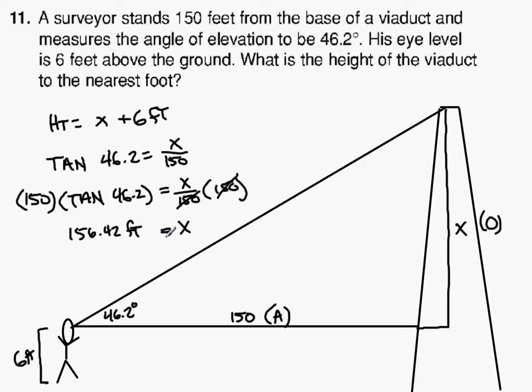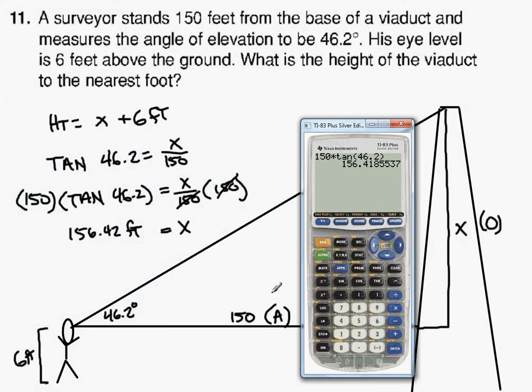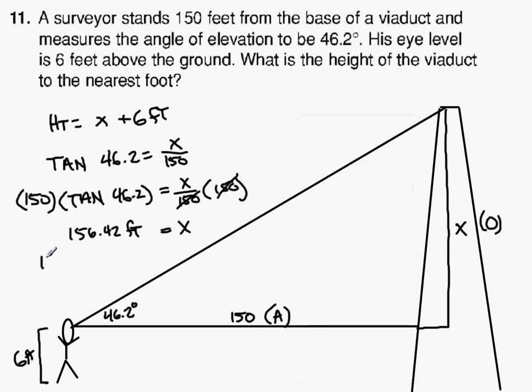So now to find the total height, we're going to take and add 6 feet to that. So we go plus 6, 162.42 feet. So height is going to be equal to 162.42 feet.